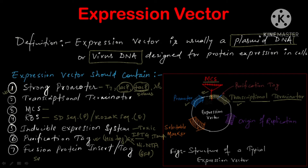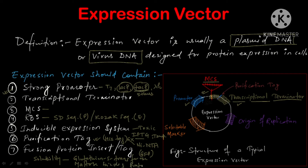Apart from that, many times we face the problem of protein solubility — proteins can be less soluble and precipitate as inclusion bodies. To address this, we use glutathione S-transferase (GST) as well as maltose binding protein (MBP). We clone the gene for GST as well as MBP along with our gene of interest, so that they are expressed together and increase the solubility of our protein of interest, preventing inclusion body formation.